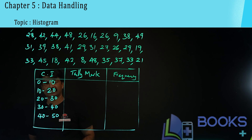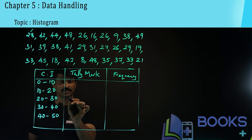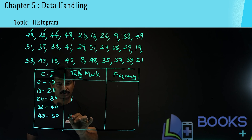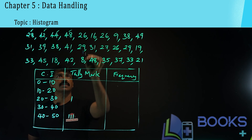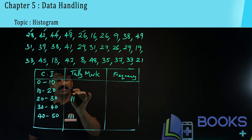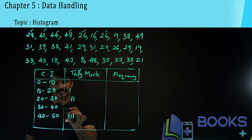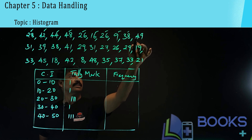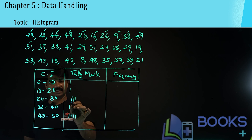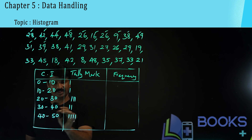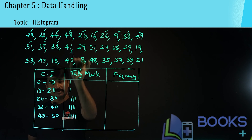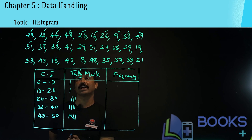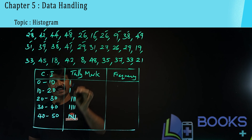The first mark is 28, which comes in the 20 to 30 class interval. Then 42, 44, 48 go into 40 to 50. Then 26 goes into 20 to 30. 16 goes into 10 to 20. 26 goes into 20 to 30. 9 goes into 0 to 10. 38 goes into 30 to 40. 49 goes into 40 to 50. 31 goes into 30 to 40. 39 also goes into 30 to 40. 41 goes into 40 to 50 — that is already 4 marks, so the fifth one you make a cross, making it 5. 29 goes into 20 to 30. 31 goes into 30 to 40.